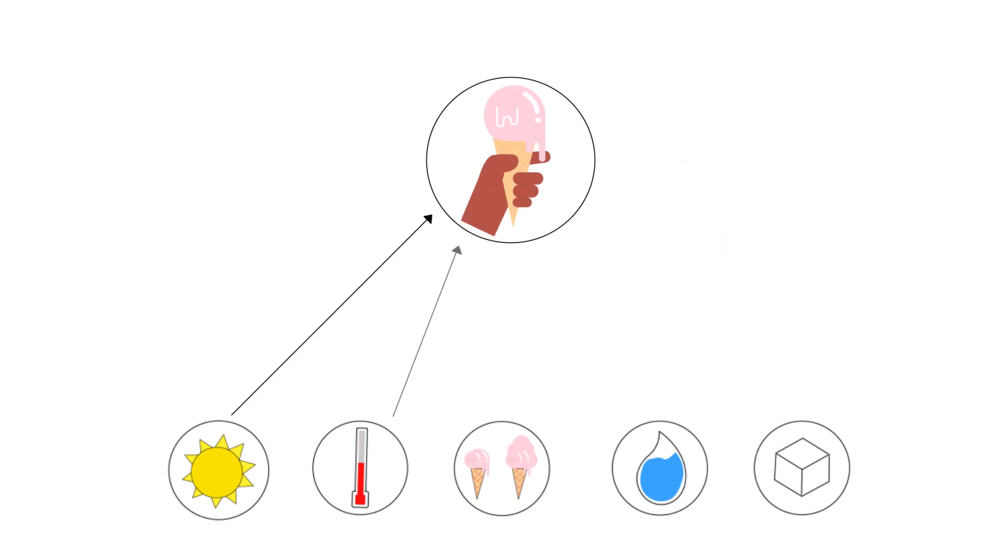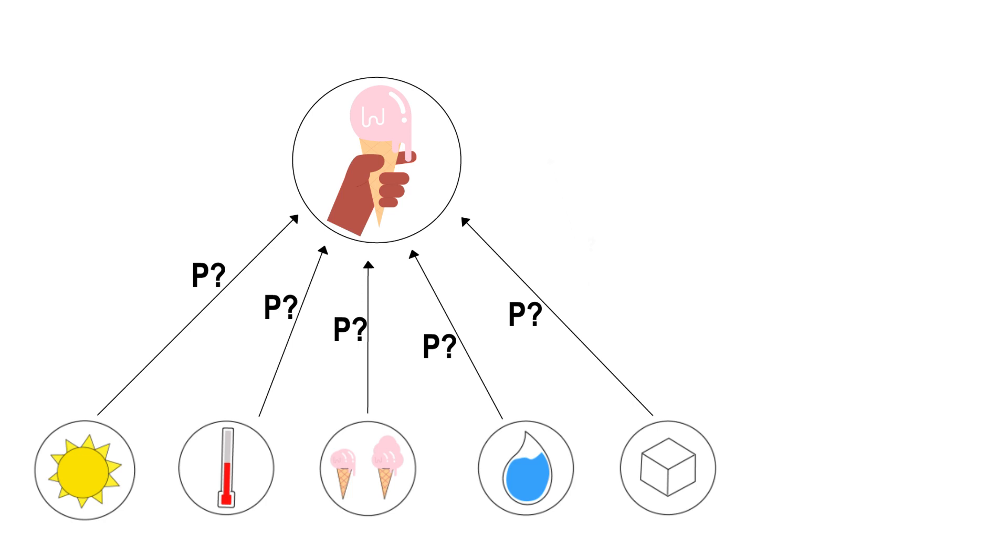We can investigate the synergic effect of all these factors on the melting rate of the ice cream. This gives us a network structure.